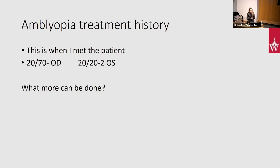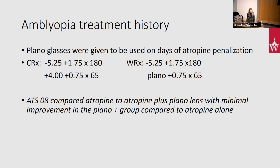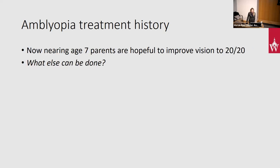Now we're back to where I met this patient: he's 20/70 in his right eye and 20/20 in his left eye. The parents really want him to be 20/20. Going back to cycloplegic refraction, I thought: let's give him a plano lens on the left eye for the days he's doing atropine penalization. He's got a little bit of increased hyperopic help when wearing his glasses prescription, and if we take that away, he'll experience even more blur effect. ATS-8 looked at atropine versus atropine plus a plano lens — results were less than impressive overall — but stratified out to the high hyperopes, there was a more robust response. This kid is a plus four and a half, not just a plus one cycloplegic, and he improved another line. But parents were impatient at two to three months and wanted more done.